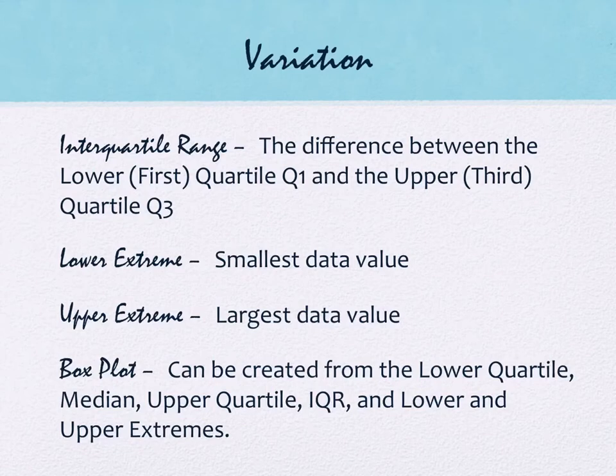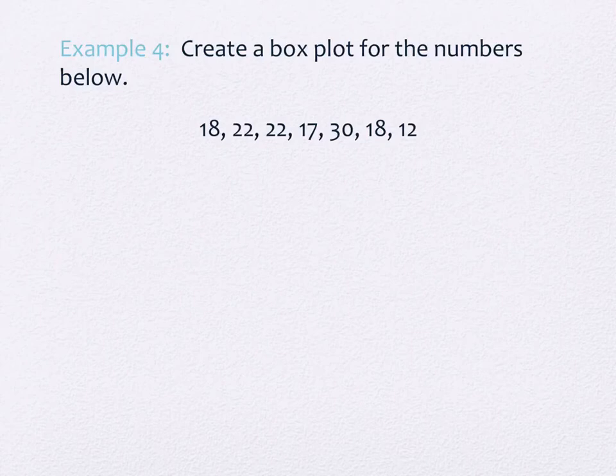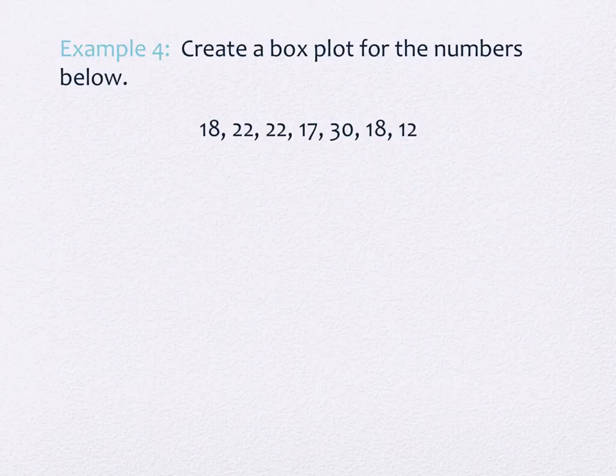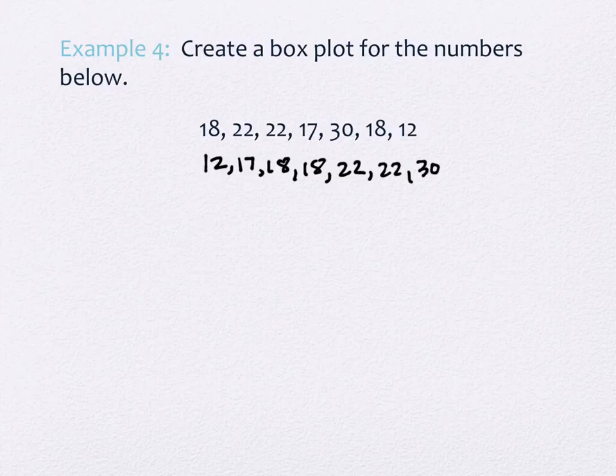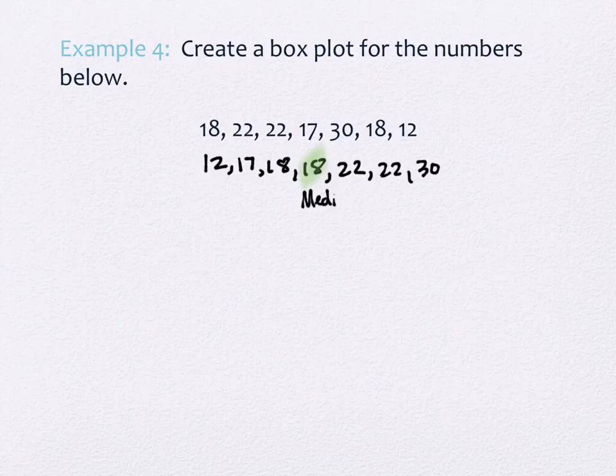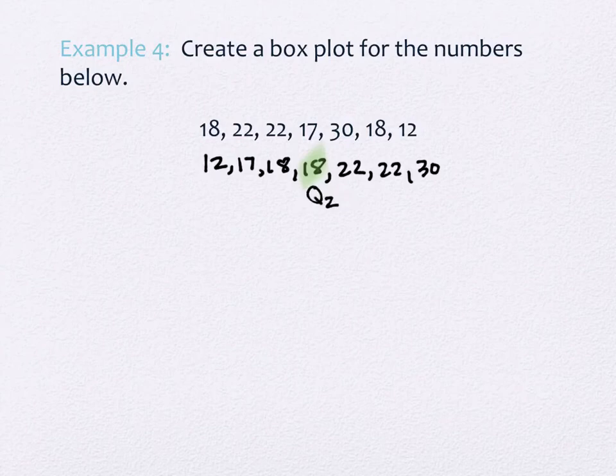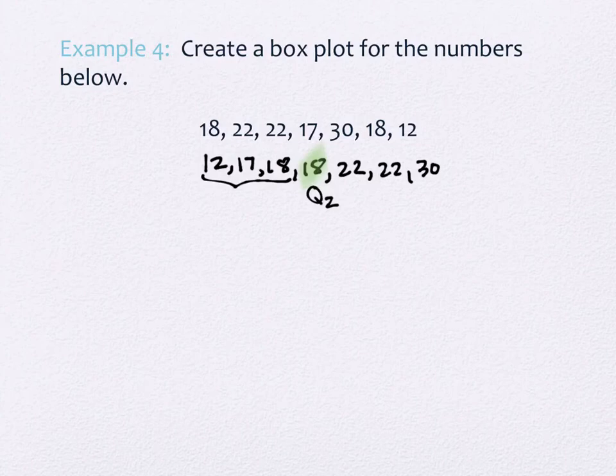So we're going to take a look at that same data set that we did before: 18, 22, and so forth. And we're going to create the box plot. So the first thing we want to do is what we did before with median is we put them in order. So we're going to put them in order. We have 12, 17, 18, 18, 22, 22, and 30. And, again, we had already identified that this is the median. Actually, let me call it Q2 just for the sake of being able to label it in a moment.